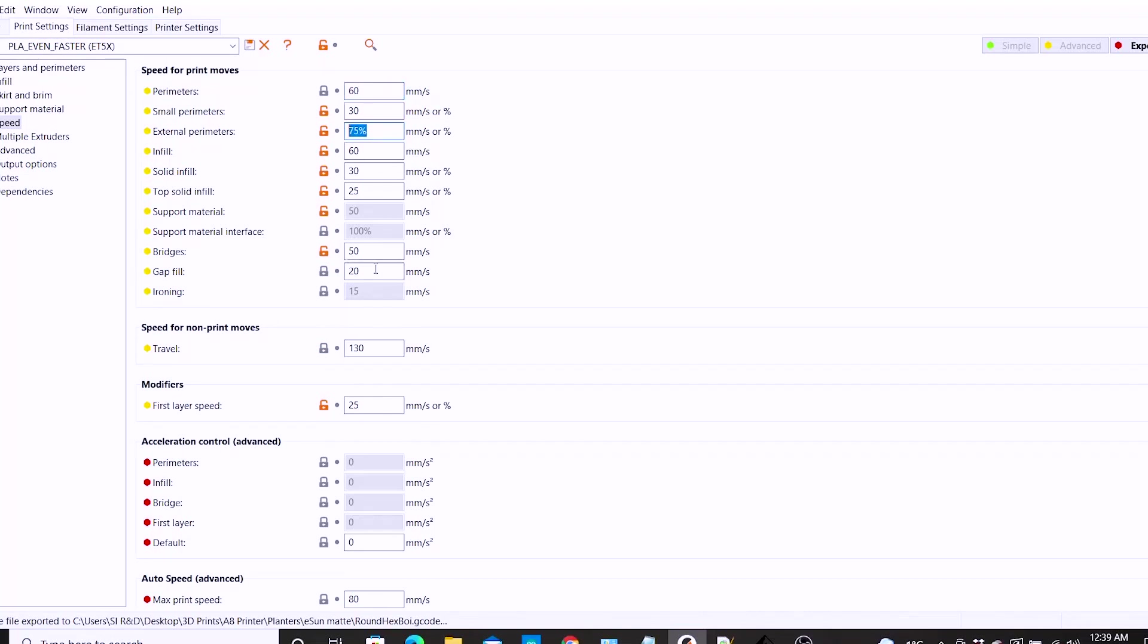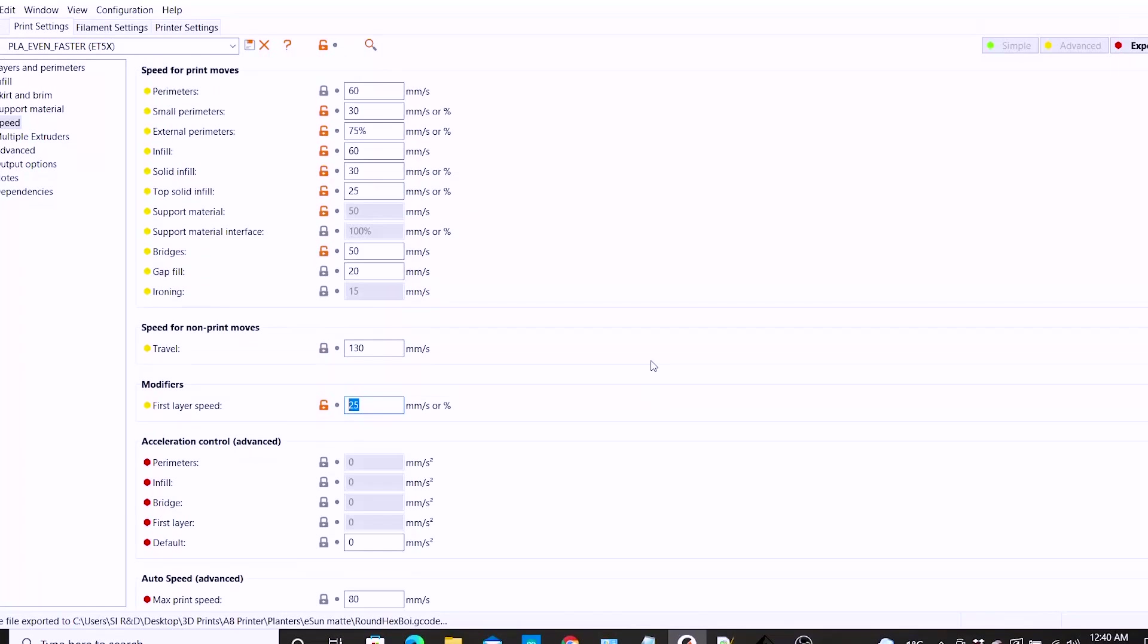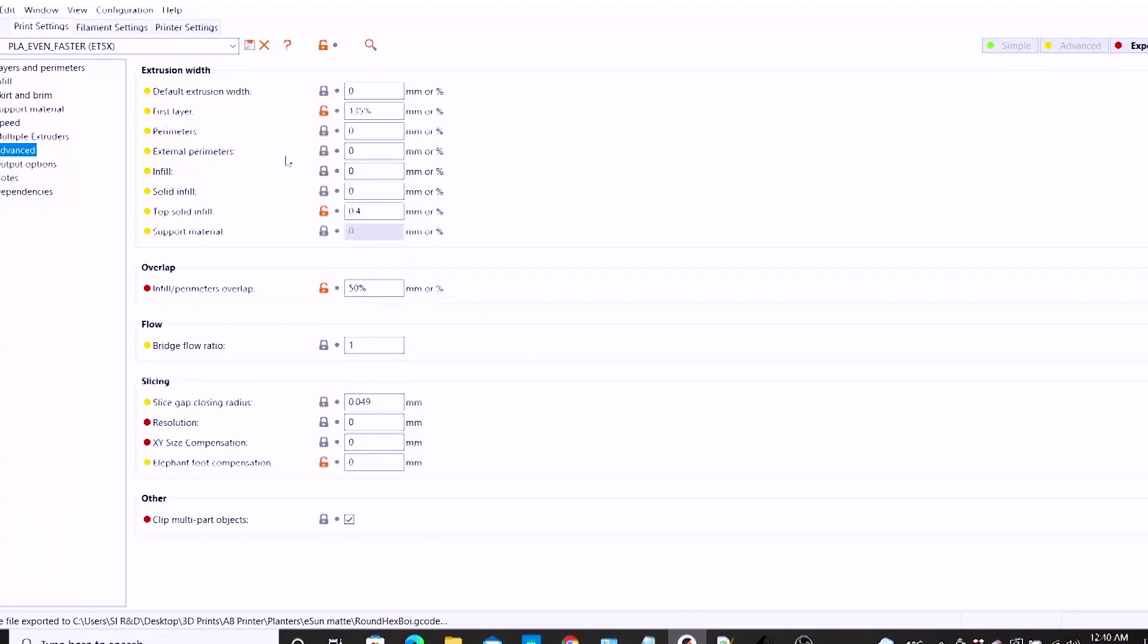Speeds - 60 millimeters per second was the base speed I set for the perimeters. My external perimeters are 75% of that. This is slower, significantly slower than what I use on most of my other PLAs. So that is another setting I did adjust for the matte PLA - I slowed things down a little bit. First layer speed at 25 millimeters per second. Normally I'll have that perimeter setting up the top set to about 80 millimeters per second for regular PLA.